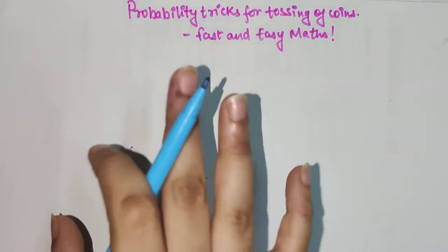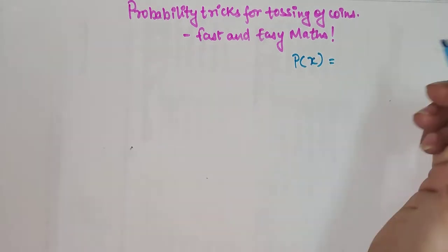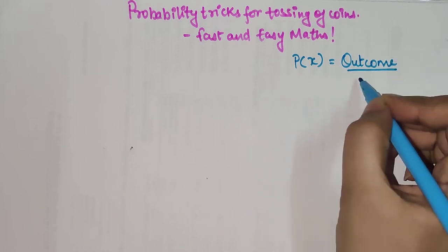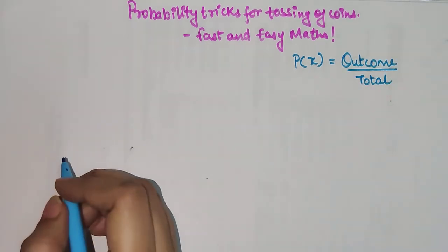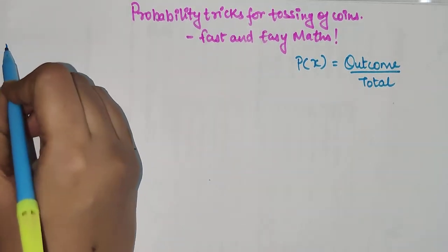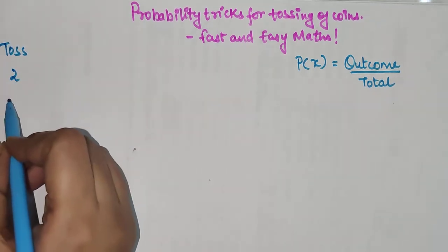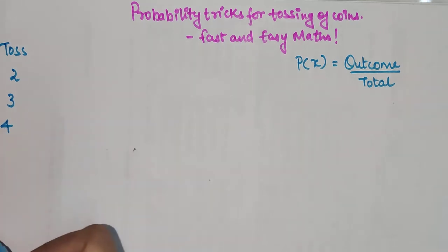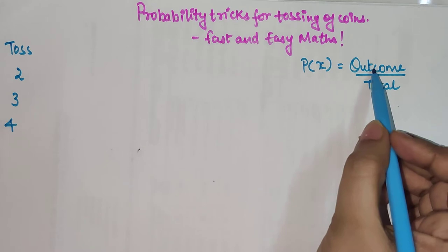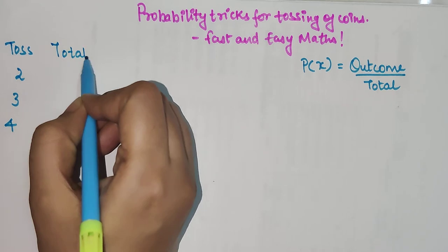As we know, probability of any event is outcome upon total. Today we are going to discuss what will be the probability for coins tossed 2 times, 3 times, and 4 times. We need to know both the outcome as well as the total, so first let's find out what the total is.